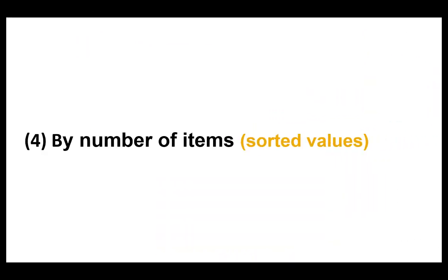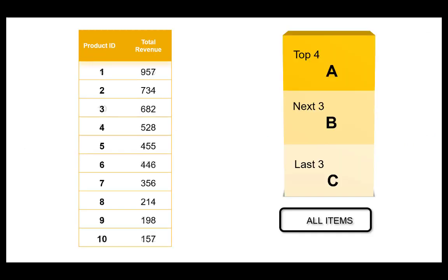The fourth method is based on the same principle, but it calculates with the actual number of items instead of percentages. For example, the top 4 items in the sorted list of all revenue-grossing products could be assigned to segment A, the next 3 to segment B, and the last 3 to segment C.